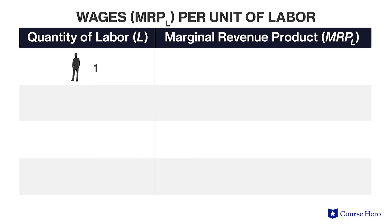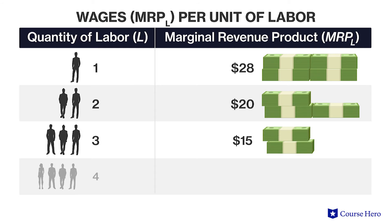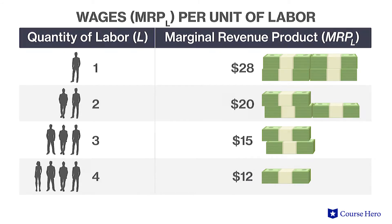In the table, we can see the corresponding revenue that each additional worker generates. The first worker generates $28 of revenue, while the second worker only adds $20, and so on. If wages were $20, the firm will hire two units of labor. If wages fall enough, the firm will want to hire more workers.